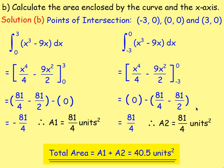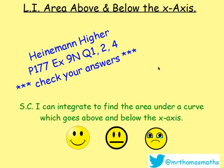That is how you would do it. The key points to take from that: if you've got a part of the graph that's above the x-axis and part that's below, split it up — work out the area above, then work out the area below, then add them together. As usual, any problems, just ask me in class or send me an email. Good luck!